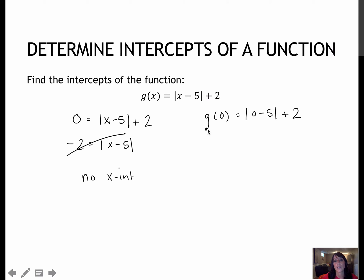Never going to cross the x-axis. For the y-intercept, g of 0 is 0 minus 5 plus 2, so that gives me 0 minus 5 is negative 5. I take the absolute value of negative 5, which is positive 5, plus 2 is 7, which means when I plugged in 0, 7 came out, so that is my y-intercept.